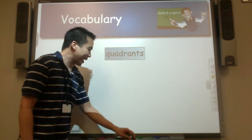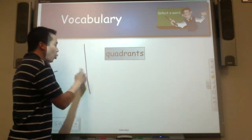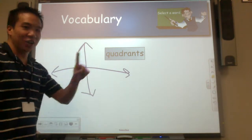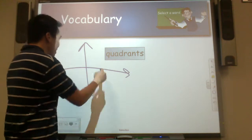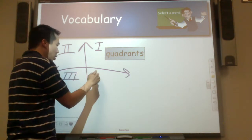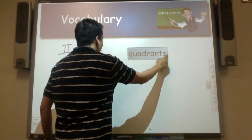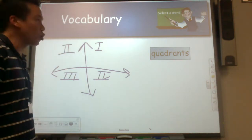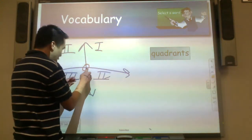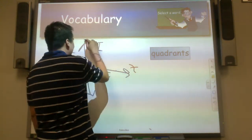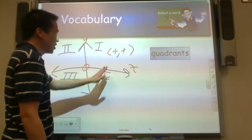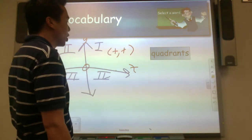So, quadrants. A coordinate plane is separated into 4 quadrants. What are the characteristics of quadrant 1? Well, 0 is the home base. We go right on the x-axis, which are positives, and we go above on the y-axis, which is also positive. So, anytime you have nothing but positive numbers, it goes in quadrant 1.